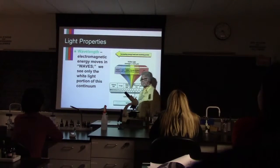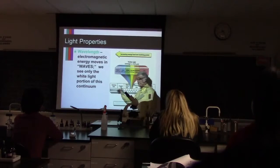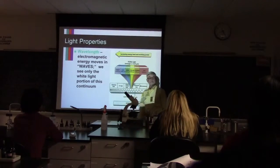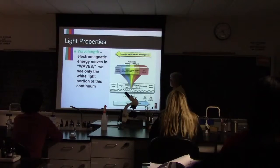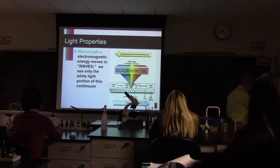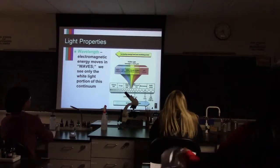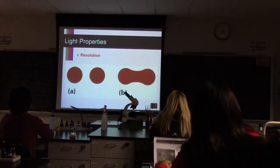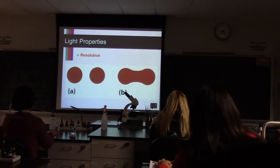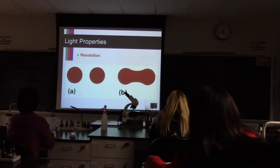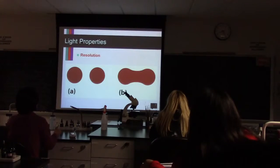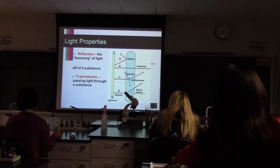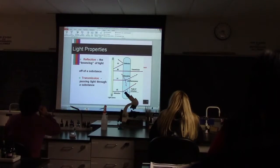We can't see ultraviolet, but we can use those wavelengths in microscopes, and we'll talk about that later. This is resolution: if the light you're shining can pass between two objects, you see them as two. If it can't, you see them as one fuzzy blob, and we're going to start there next time.